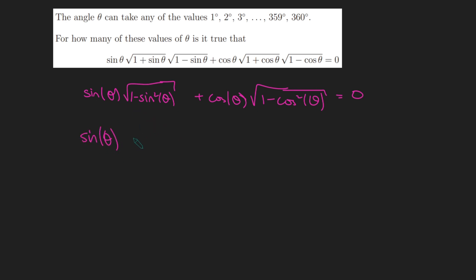So this is sin(θ) times the square root of cos²(θ) plus cos(θ) times the square root of sin²(θ) equals 0. And now what we can do is just cancel the square root of the square. So we get sin(θ) times cos(θ) plus cos(θ) times sin(θ) equals 0.